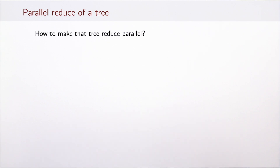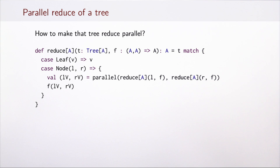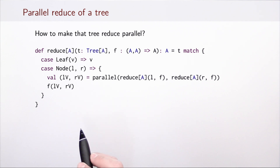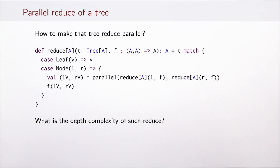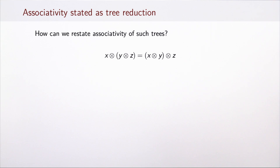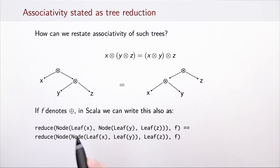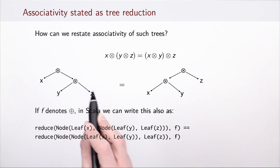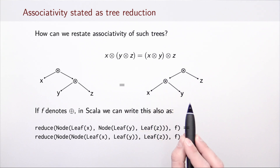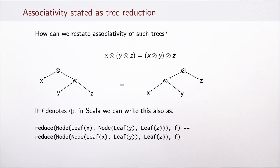How do we do reduce on a tree in parallel? This is a case where parallelism is easy to add: we compute the reduce of the left and right subtrees in parallel to obtain two values, then apply operation f to combine them. The depth complexity of such a parallel reduce is linear in the height of the tree. Associativity corresponds to the fact that a tree shifted more towards the right gives the same result as another arrangement, as long as element order is preserved.